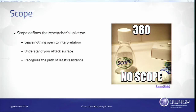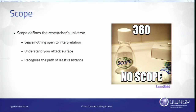Now we start building the bounty brief. The single most important thing is the scope — it tells researchers what they're going to test. First: leave nothing open to interpretation. If we say the scope is myapp.com/app, a researcher looking at that doesn't know whether they're allowed to test only /app or all of myapp.com. In either case they're testing too little or possibly too much. Making sure the scope can't possibly be misunderstood by researchers is incredibly important.